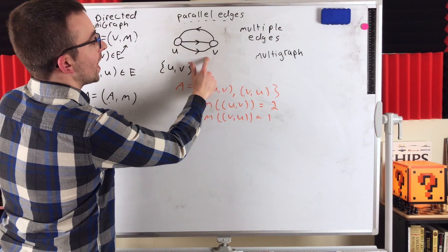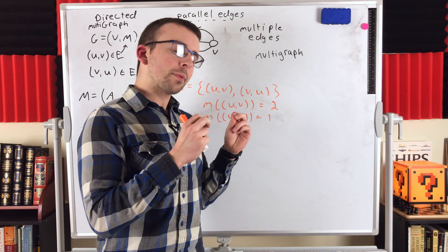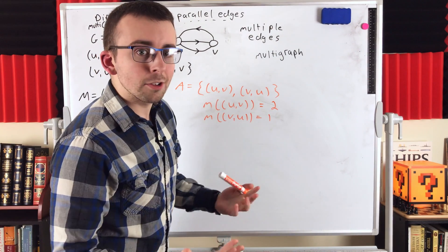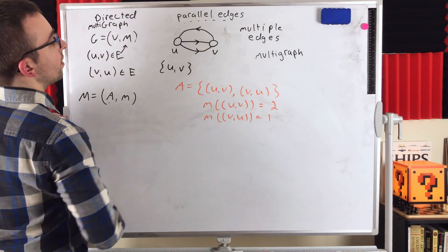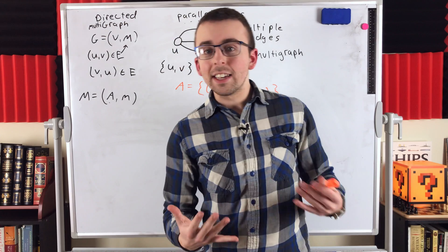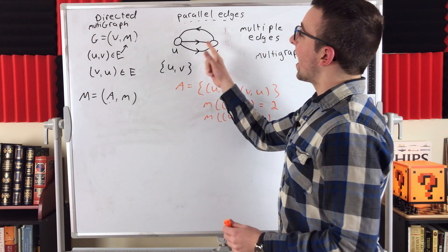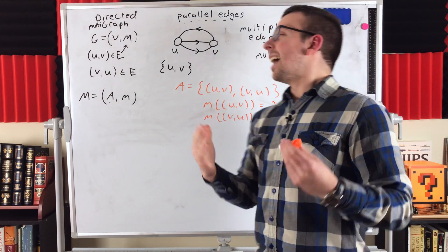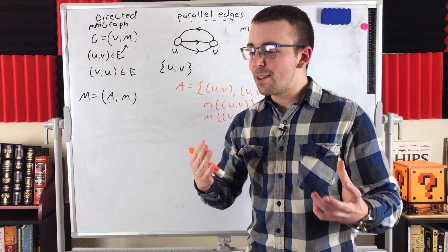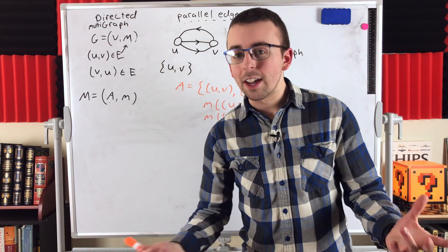These are certainly parallel edges or parallel arcs — there are two identical arcs with the same end vertices going the same direction. But again, by conventional definitions, the two arcs going in opposite directions are also considered parallel arcs or parallel edges, because they have the same end vertices. That's a little bit about parallel edges: how they're defined and how we modify the definition of graphs to allow for their consideration. I prefer the term parallel edges because what's really meant by 'multiple edges' is that we allow multiple edges to join the same pair of vertices.